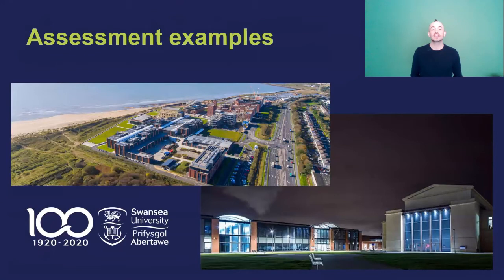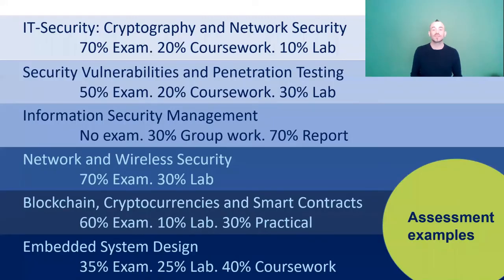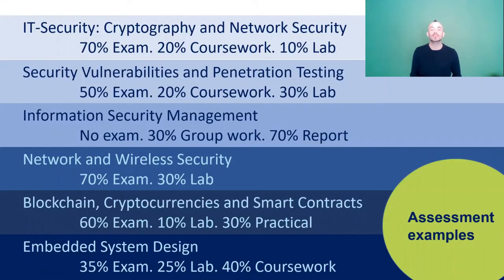So to take a look at how the MSc in cyber security is assessed. Firstly, IT security, cryptography and network security, and secondly security vulnerabilities and penetration testing — we've already gone through these two. The third on the list is information security management; this course has no exam — it's 30% from group work and 70% report. In network and wireless security, the assessment is 70% from exam and 30% from lab.